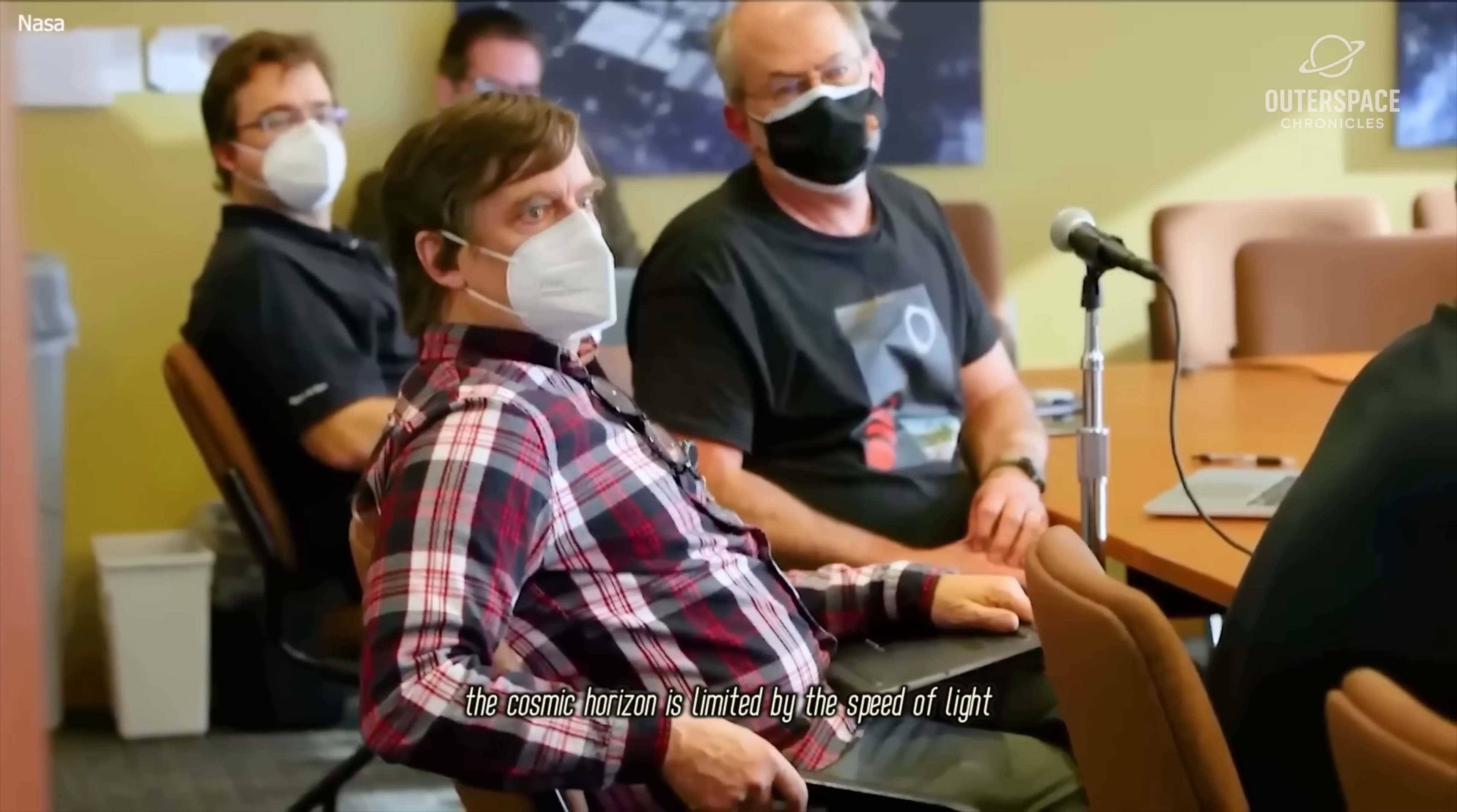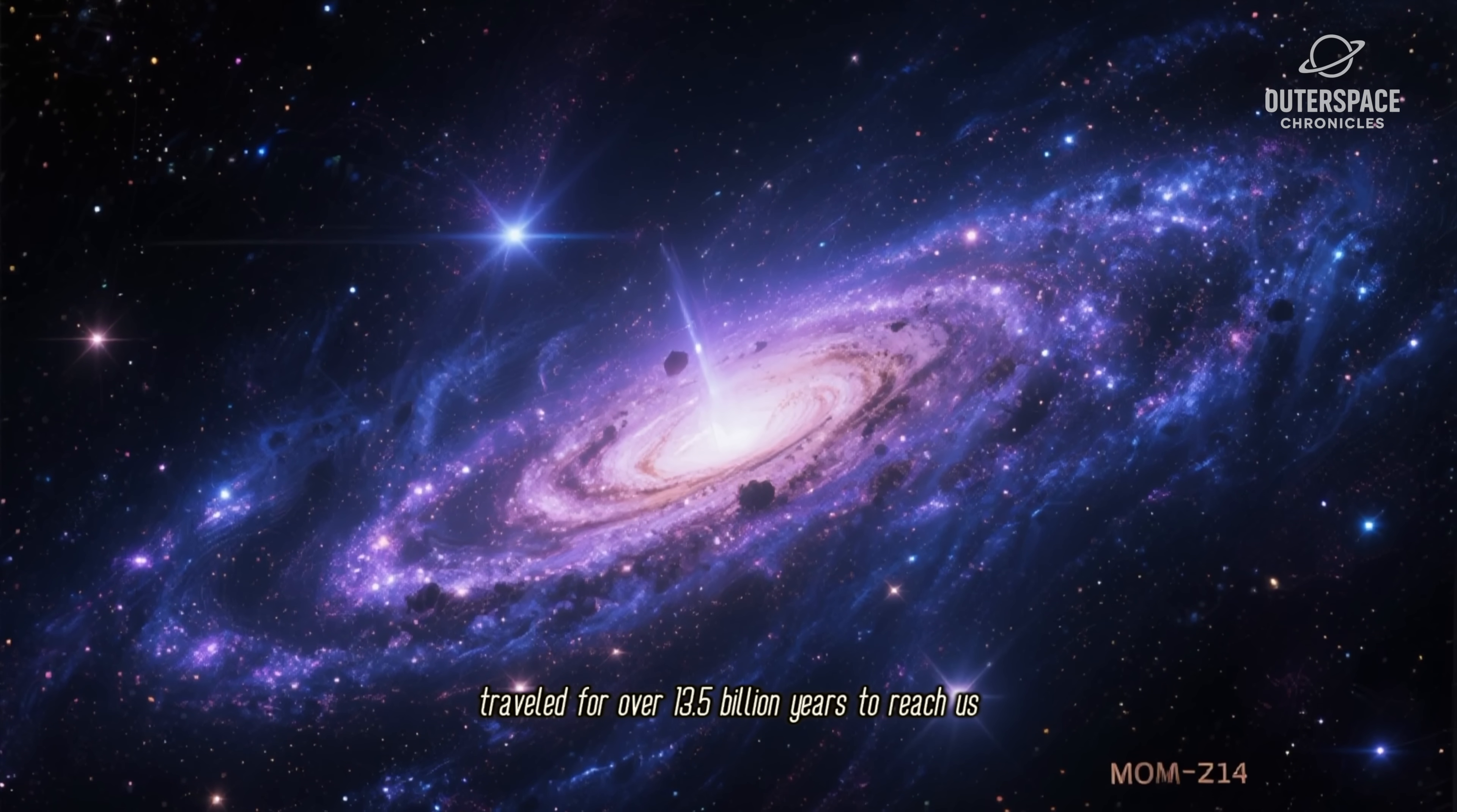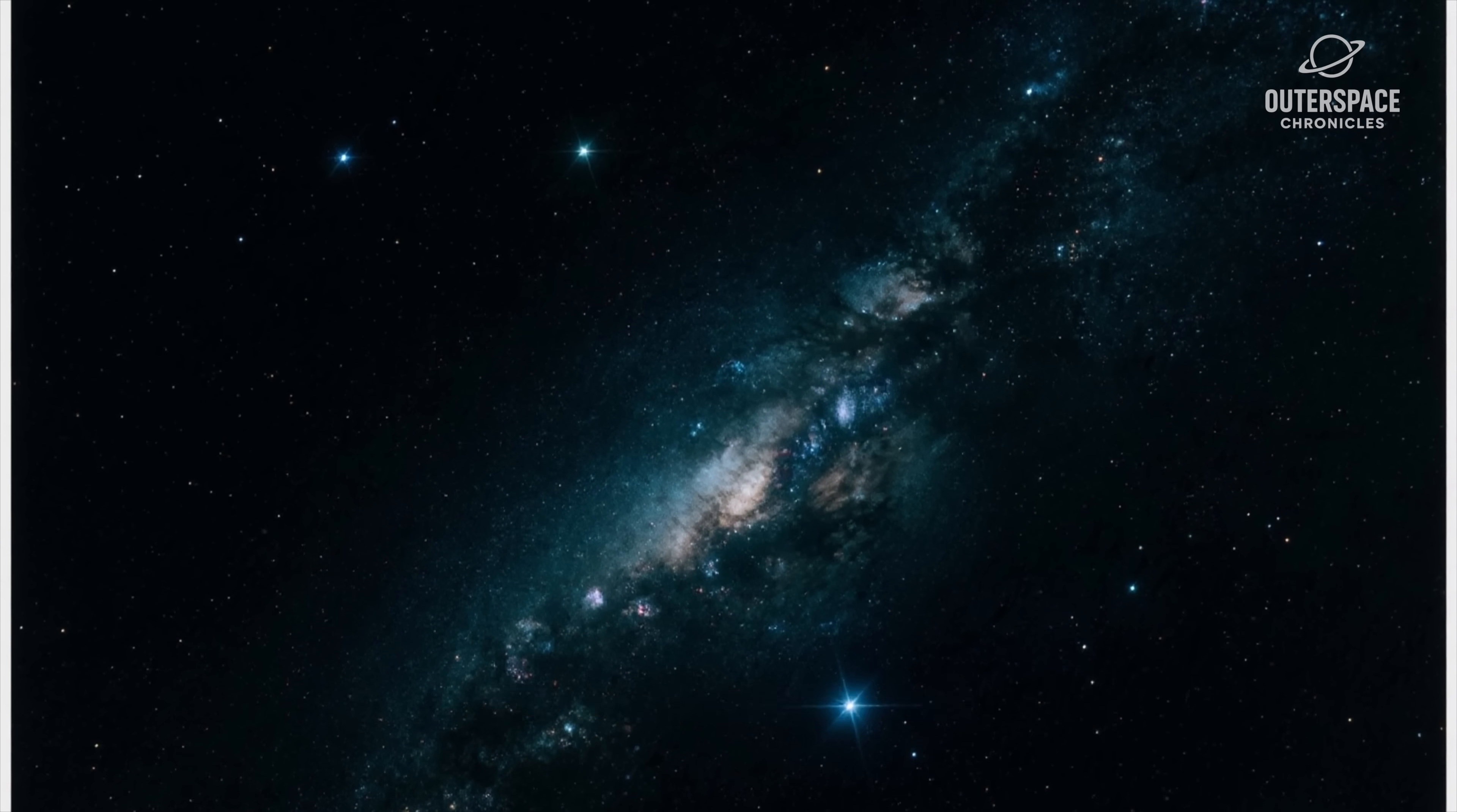The cosmic horizon is limited by the speed of light and the age of the universe. The light from the most distant galaxy Webb can see—a record breaker named JADES-GS-z14—traveled for over 13.5 billion years to reach us. We are seeing it as it was just 280 million years after the Big Bang. We literally cannot see anything before that, because no light from an earlier time has had a chance to reach us yet. That is the true edge: the dawn of time itself.